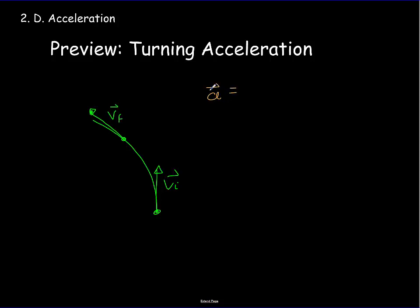When we calculate the acceleration — a vector — it equals the final velocity vector minus the initial velocity vector, all over the time it took to make that change in direction.